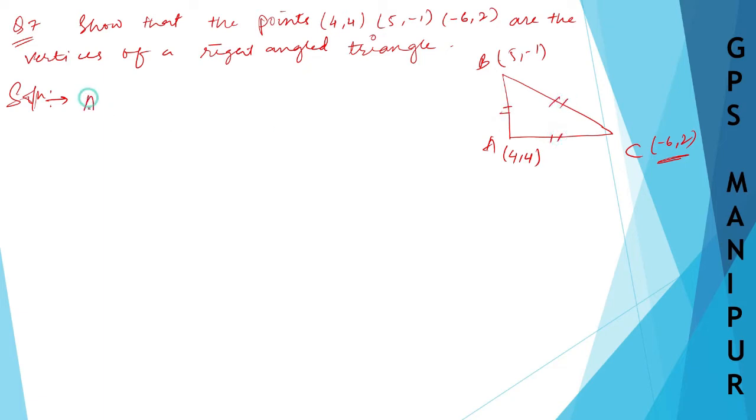Now let us find out AB. AB will be equal to root over (4 minus 5) whole square plus (4 minus minus 1) whole square. This is equal to root over 1 square plus 5 square, which equals root over 1 plus 25. So which will be root over 26.